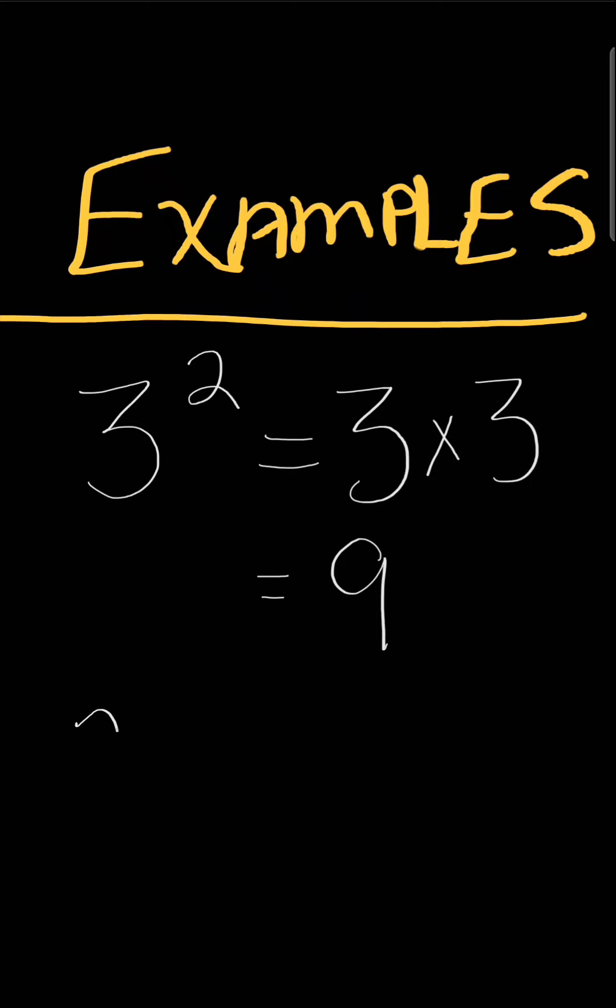How about this one? 2 to the power of 3. Well, this tells us that 2 is being multiplied times itself 3 times. So 2 to the third power is 2 times 2 times 2, which is 4 times 2, which is 8. So 2 to the power of 3 is 8.